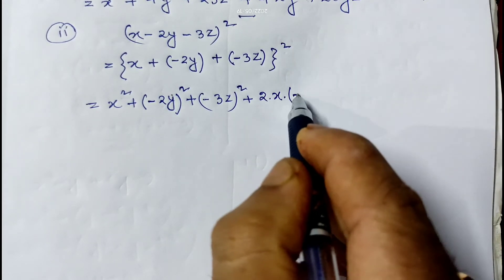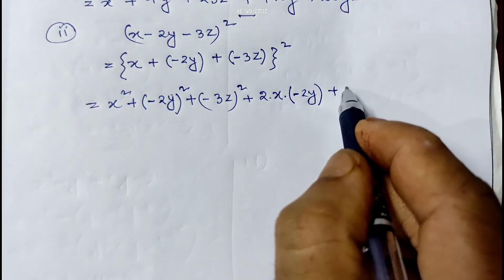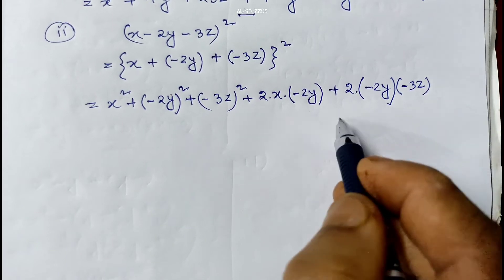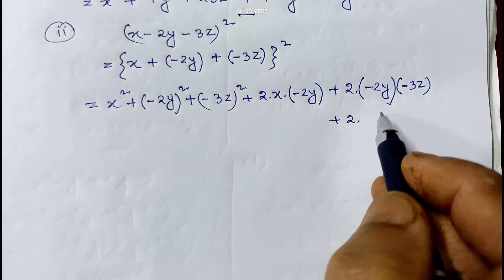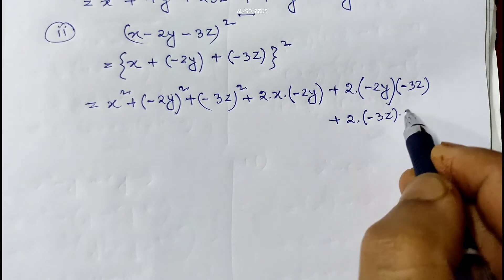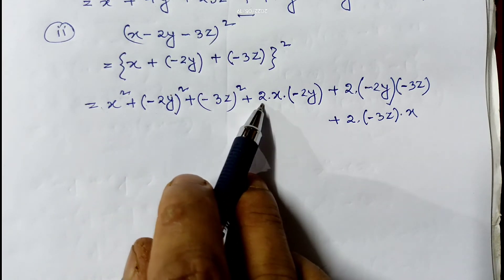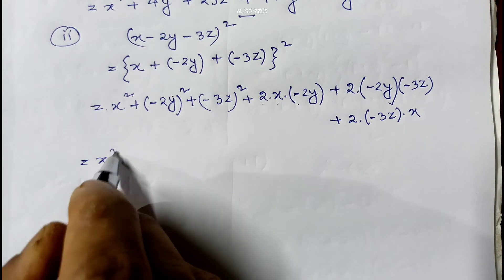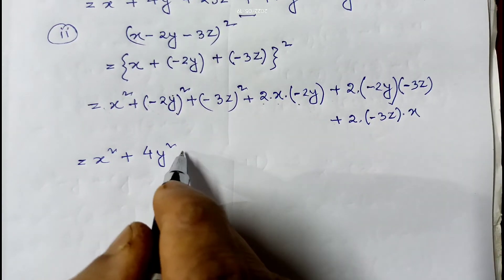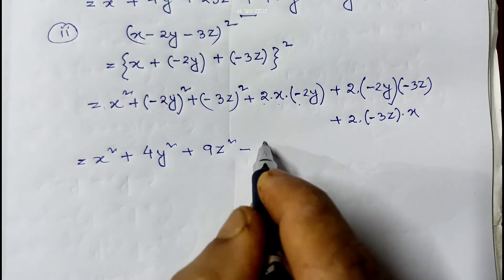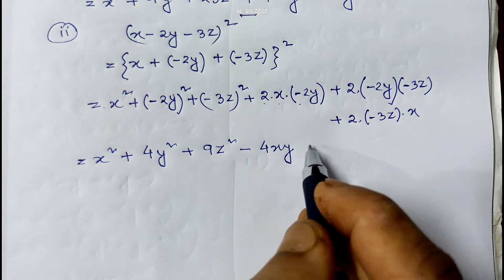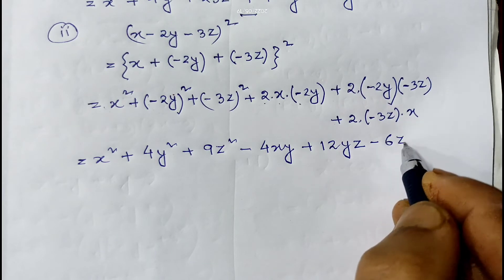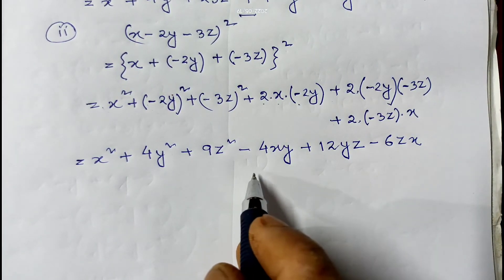Substituting: x² + (−2y)² + (−3z)² + 2·x·(−2y) + 2·(−2y)·(−3z) + 2·(−3z)·x. This gives x² + 4y² + 9z² − 4xy + 12yz − 6zx. This cannot be further simplified, so this is the required answer.